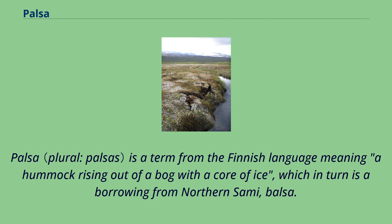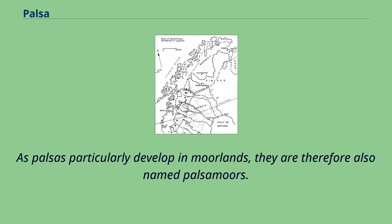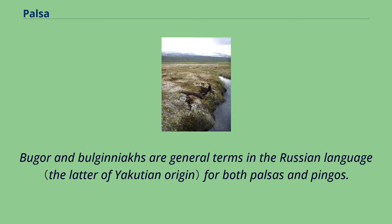Palsa is a term from the Finnish language meaning a hummock rising out of a bog with a core of ice, which in turn is a borrowing from Northern Sami, 'balsa'. As palsas particularly develop in moorlands, they are therefore also named palsamars. Bugger and bulginiaks are general terms in the Russian language for both palsas and pingos.